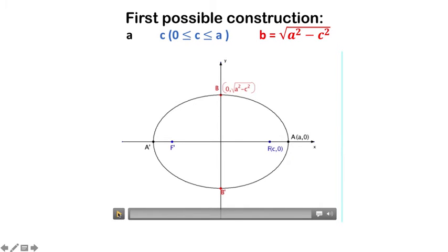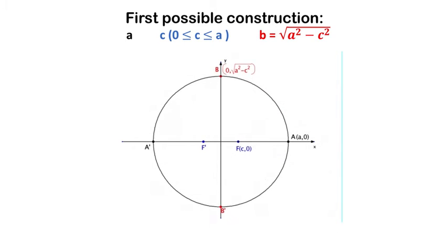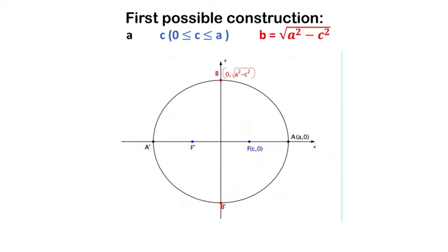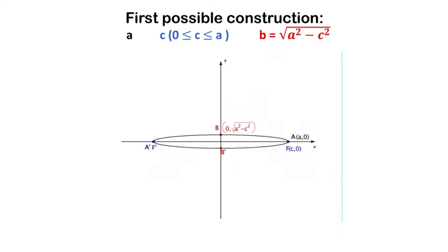And you can check that if I change the value of c, I can generate all the possible shapes from the circle, diameter AA prime, to as a limit the segment AA prime.